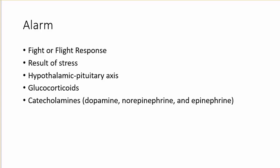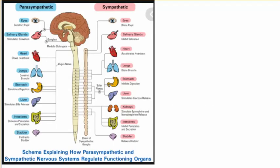In the alarm phase, we can talk about the fight-or-flight response — it's the result of stress. We can talk about the hypothalamic-pituitary axis. Glucocorticoids are released, catecholamines are released. In that stress response, this sympathetic side is what kicks in — our pupils get big. The sympathetic side is designed to kick in as part of our nervous system.